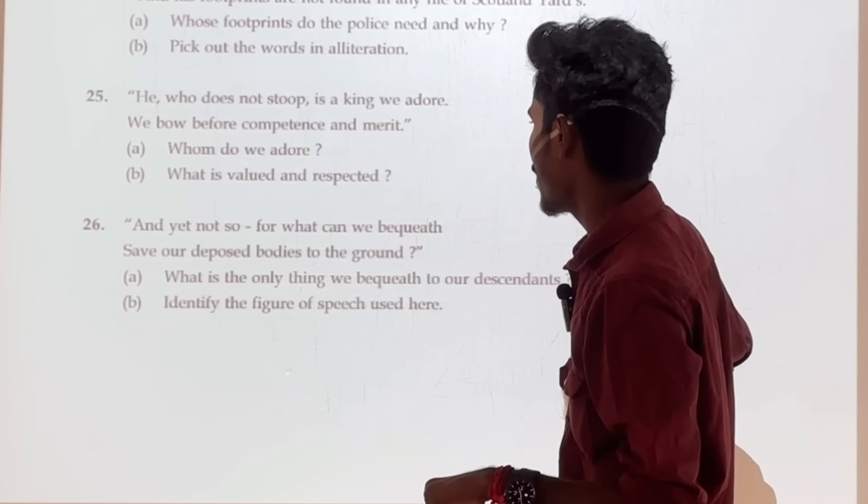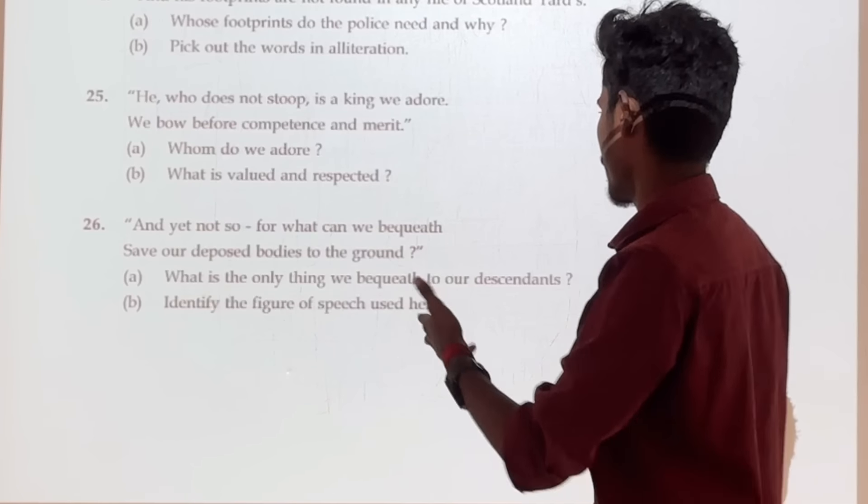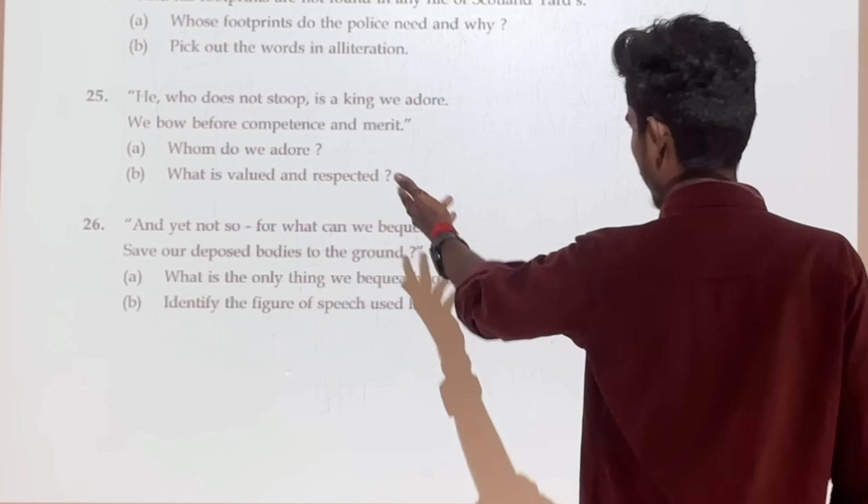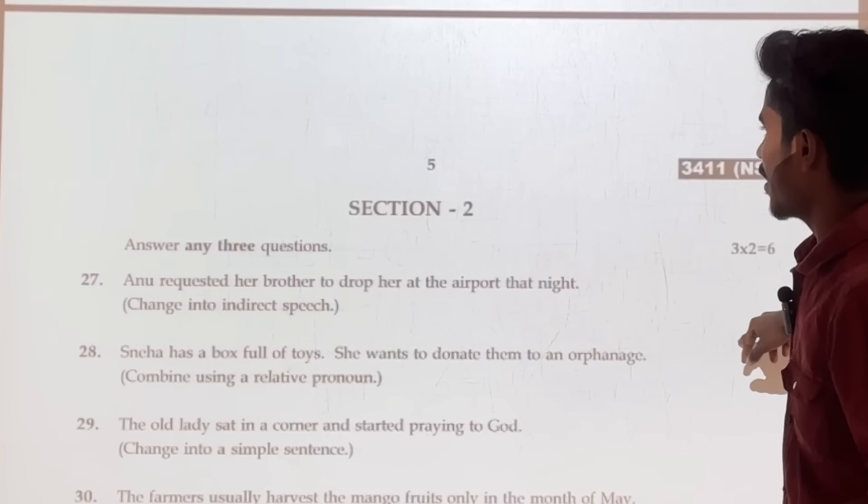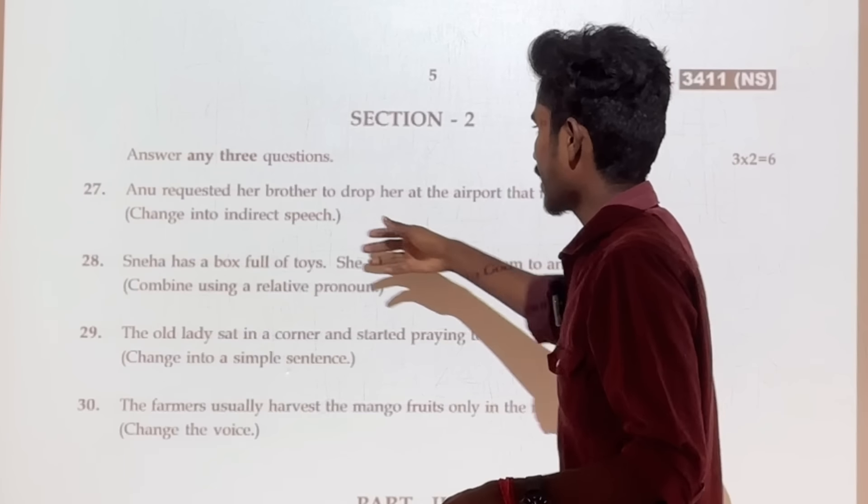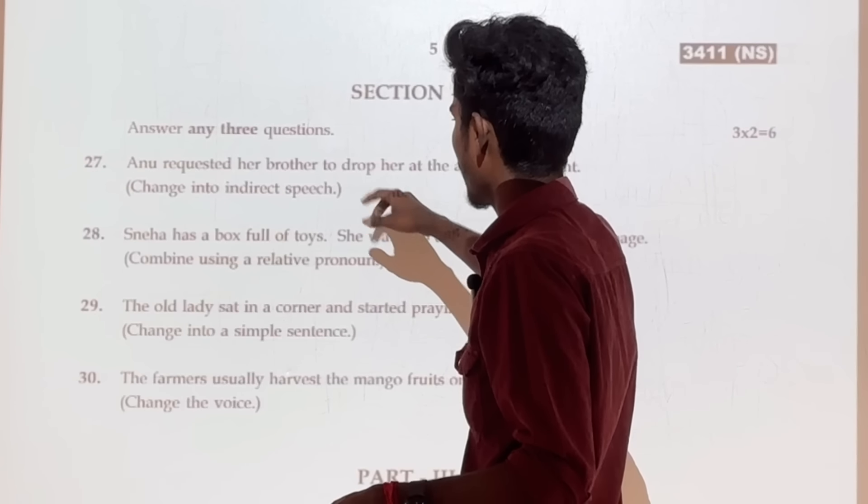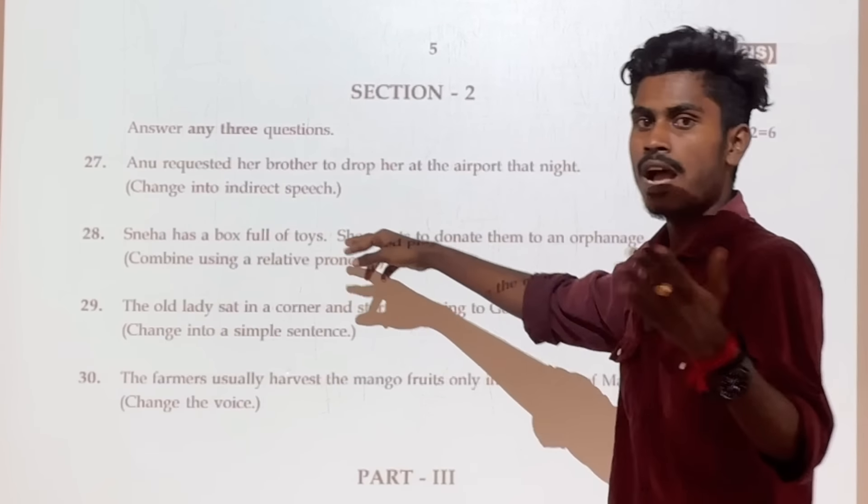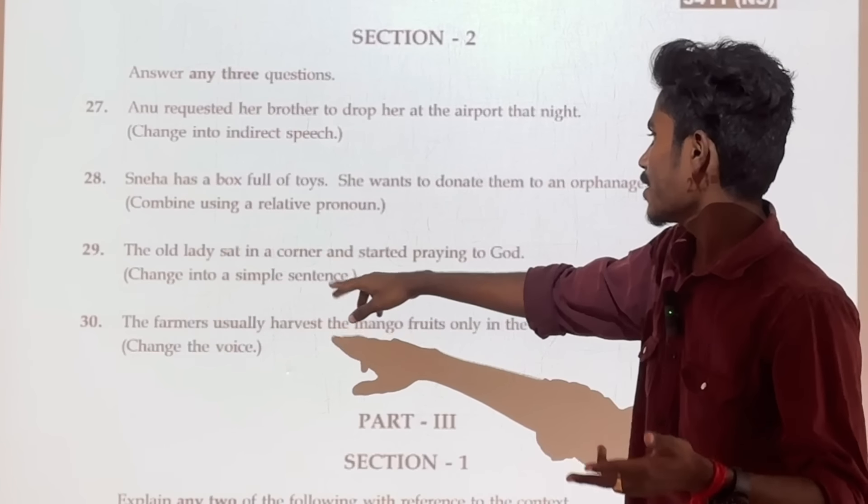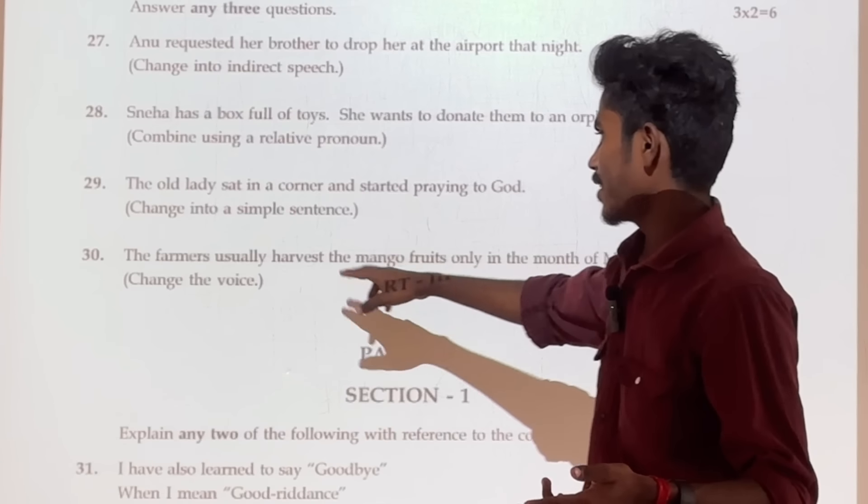So, you can see the figure of speech. You can see the question and the maximum answer. And the question is active as passive as, direct switch indirect speech, active as passive as, change into a simple sentence, change the voice.